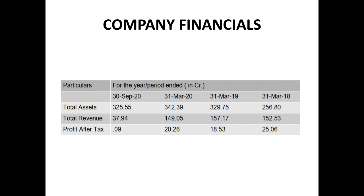The total assets for 30th September 2020 is 325.55. The total revenue of the company is 152.53 for 31st March 2018, 157.17 for 31st March 2019, 149.05 for 31st March 2020, and 37.94 for 30th September 2020.